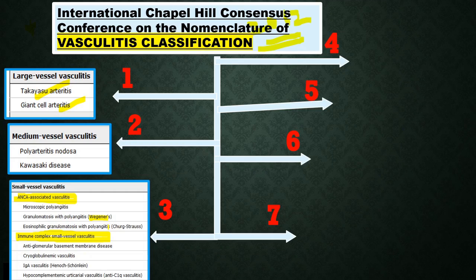The third one is called Churg-Strauss syndrome, which is also called eosinophilic granulomatosis with polyangiitis. These three come under ANCA-associated vasculitis.